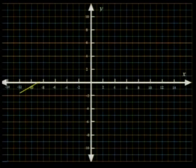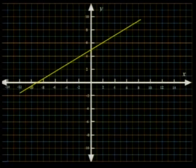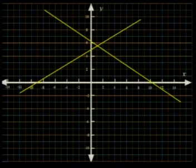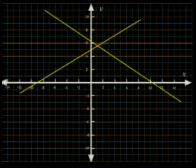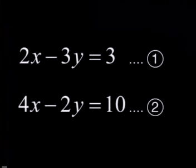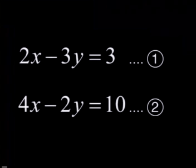What does it mean to find a graphical solution to simultaneous linear equations? We drew the graphs for both equations and found a common point — the point of intersection of the two lines. This point was the solution. Look at this system of equations. We need to find those values of x and y that satisfy both equations. We named them equation 1 and equation 2.